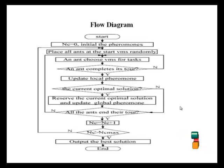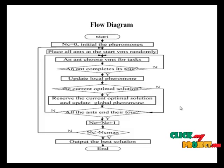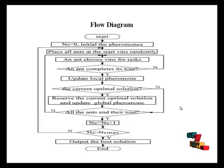This is our flow diagram. First we start the process, create a data center and VMs. Then we randomly choose from the VM list, select a suitable VM, and assign a particular job to it, then update the load balance.